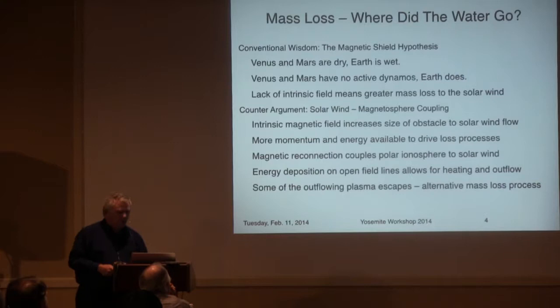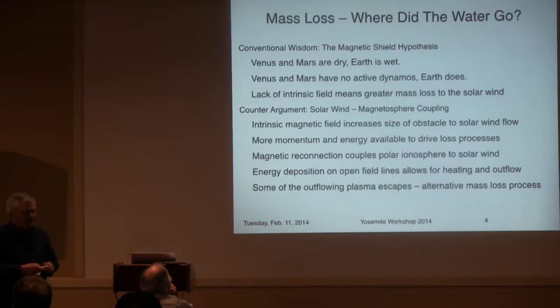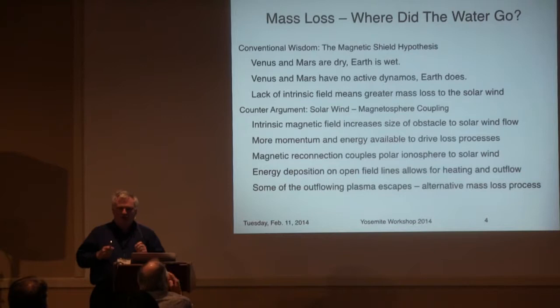So where did the water go, if you believe it was lost? This is, in my view, a false syllogism. Venus and Mars are dry; the Earth is wet. Venus and Mars have no active dynamos; the Earth does. Therefore the presence of an active dynamo acts to shield the planet from the solar wind and reduce the loss of water. I believe that's a false syllogism, and I'll show why.